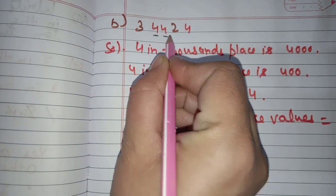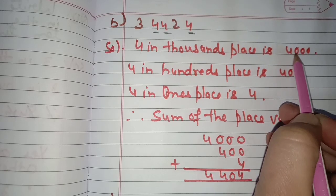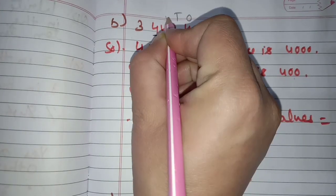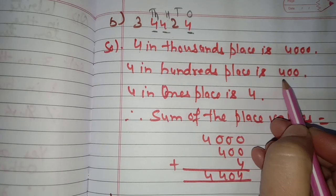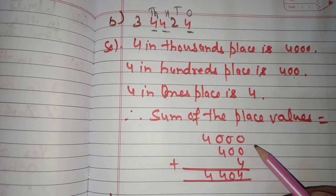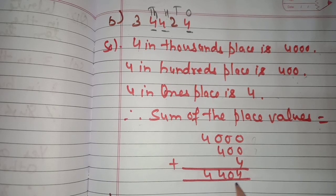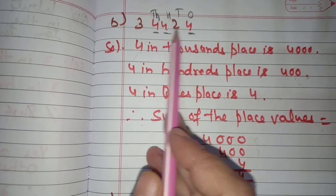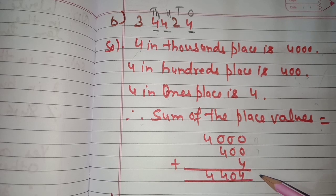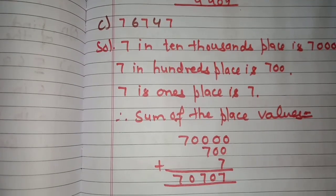Part b: 3,442 — find place values of the colored digits. Four in thousands place is 4,000; four in hundreds place is 400; four in ones place is 4. Add all the place values: 4,000 + 400 + 4 = 4,404. First find the place value of each underlined digit, then add them all to find the sum.